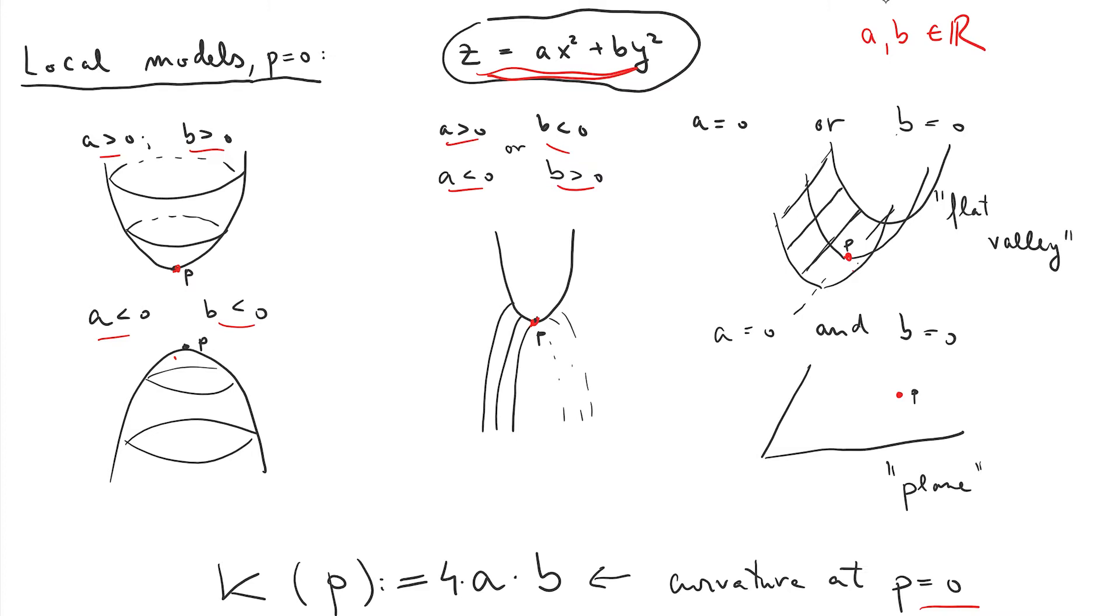And then there's also the degenerate cases where either one or both A and B are zero. So if only one of them is zero, then you get these type of valley graphs where you always have a flat direction. I call them flat valleys for lack of a better term. If both A and B are zero, then the graph is just the X or Y plane.